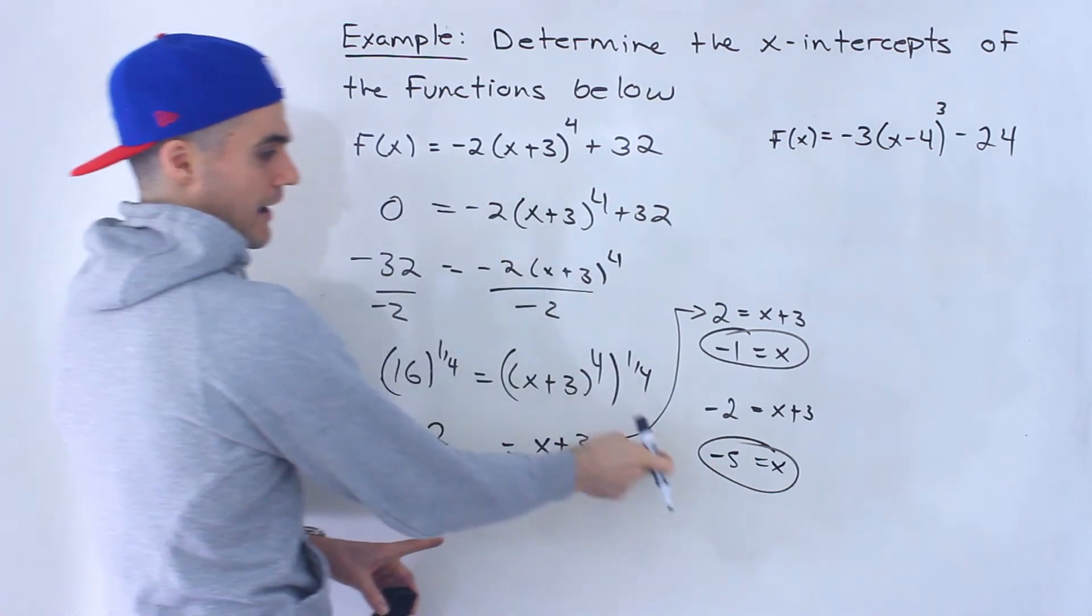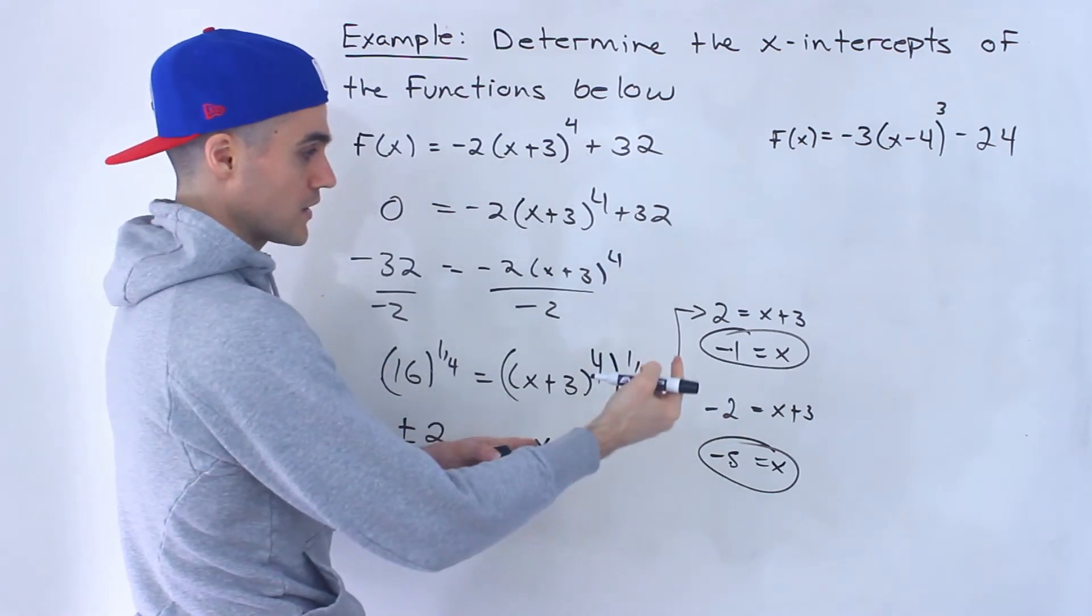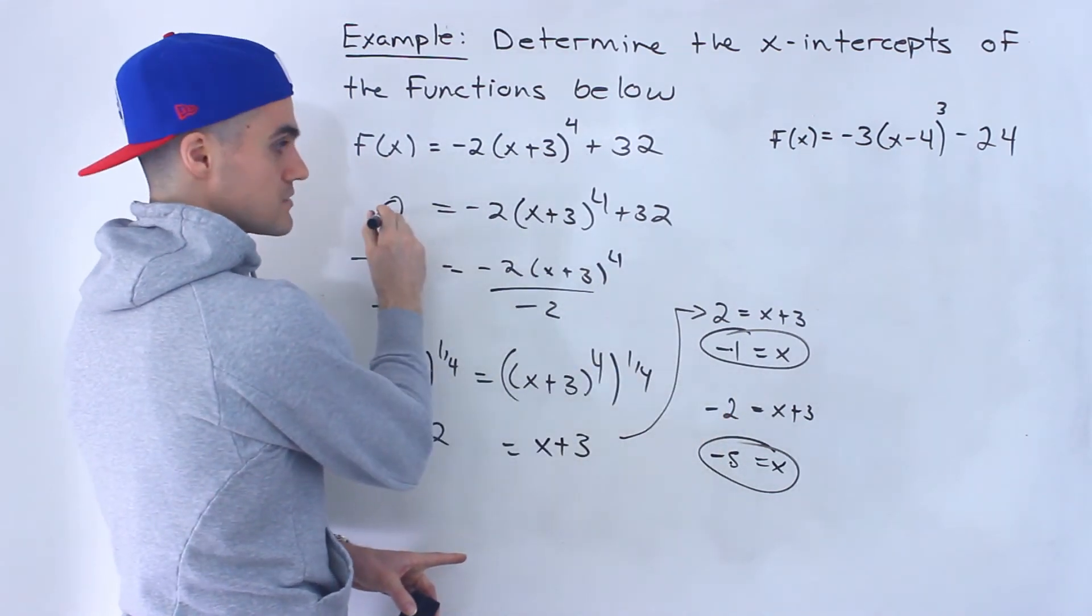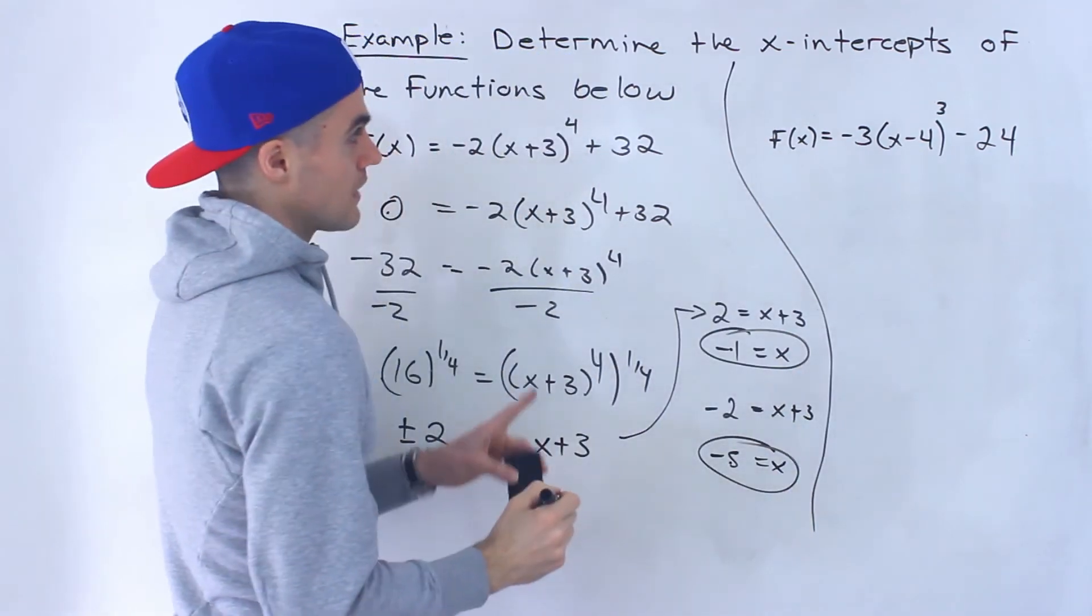So this function here has two x-intercepts, -5 and -1. The corresponding y values for both of those x values is 0. So two x-intercepts for that function.